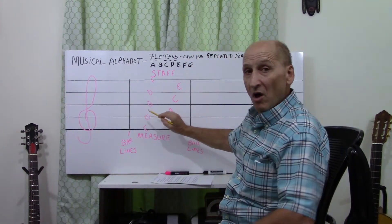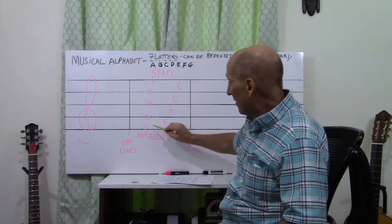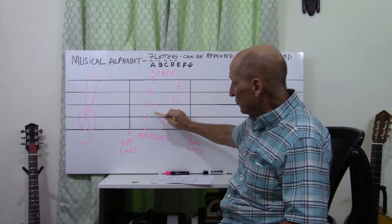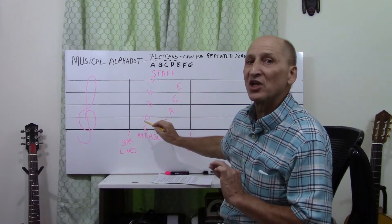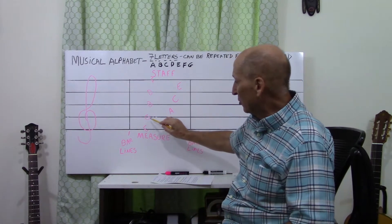This line we know, it's a given, it's a G. Now, music staff goes in alphabetical order. Musical alphabetical order.